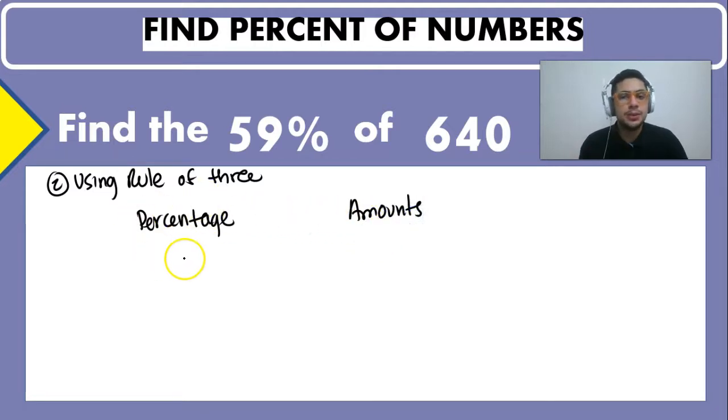So in this case we have two percentages we have the 59% and we have the 100% and we don't know what's the 59% because that's what they are asking us to find but we know that the 100% or the total, the whole, is going to be 640.